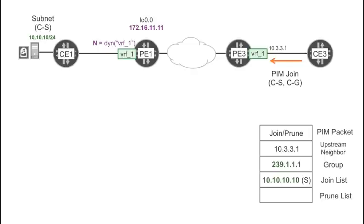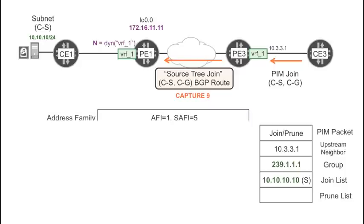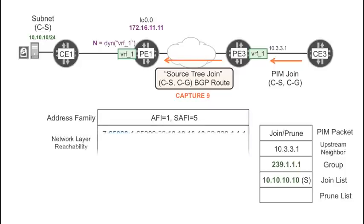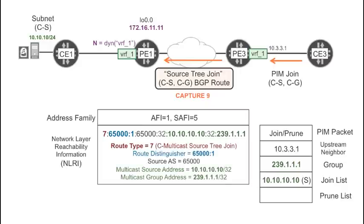Let's see the source tree join route in detail. As any multicast VPN route, it has AFI 1, SAFI 5. This time, the route is type 7, which stands for C-multicast source tree join.